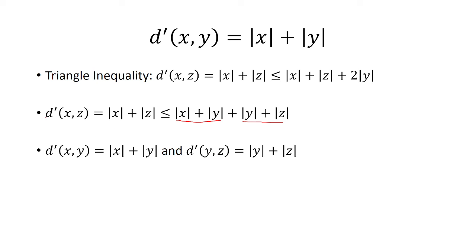So now, going back to this inequality, I'm going to have d' of x comma z is less than or equal to d' of x comma y plus d' of y comma z. And so the triangle inequality is satisfied, and therefore we say that this is a metric on ℝ.